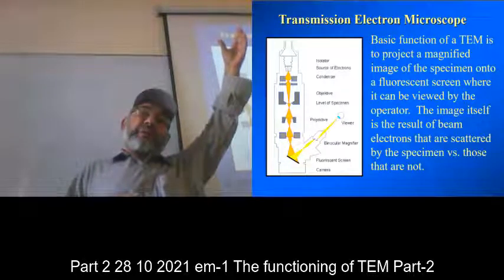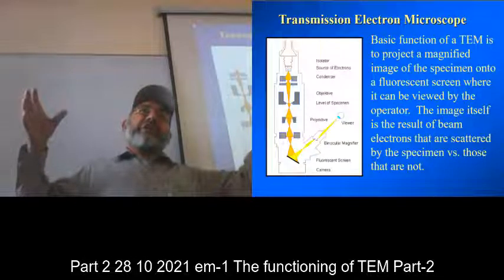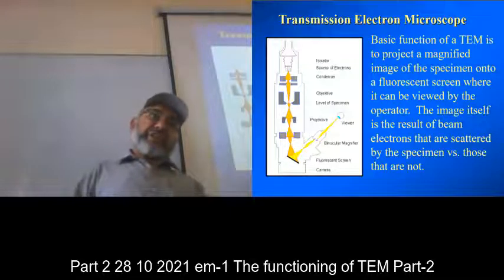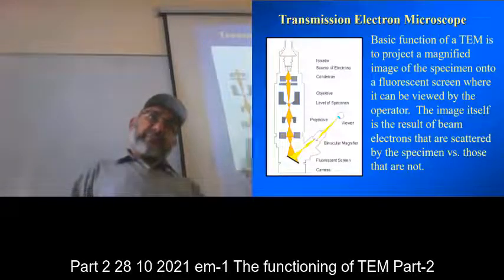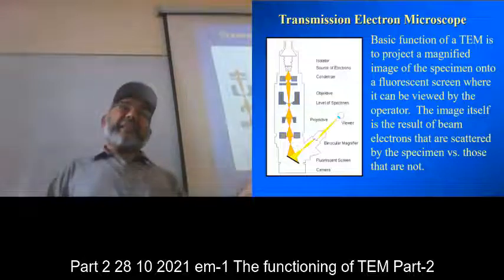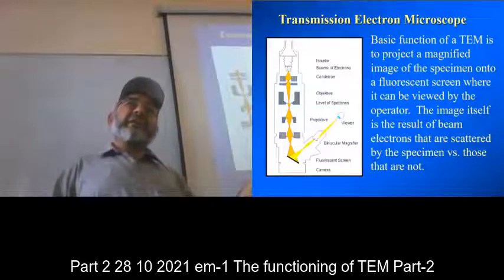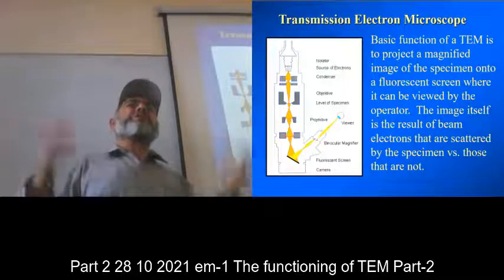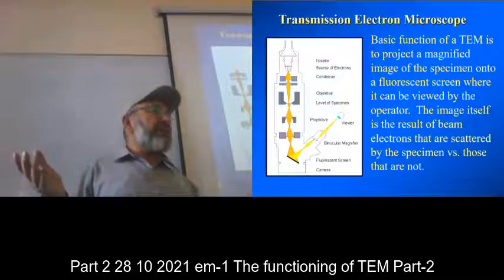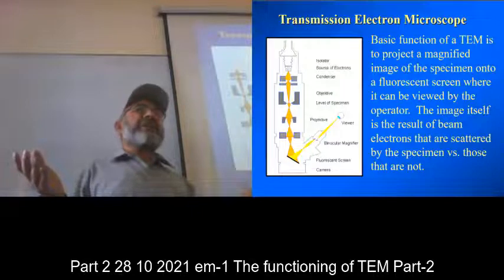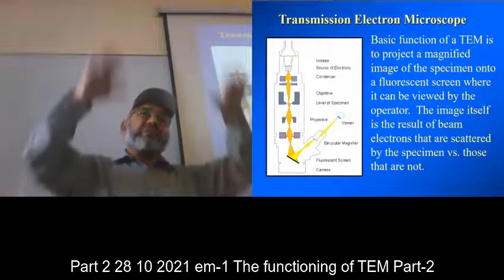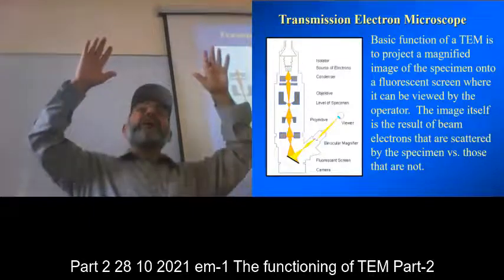The electron gun emits electrons, which are shaped into a beam that is projected upon the sample. When the beam strikes the sample, that striking gives rise to numerous events - some are transmitted, some are refracted, some are deflected, some are reflected, all sorts of events occur.